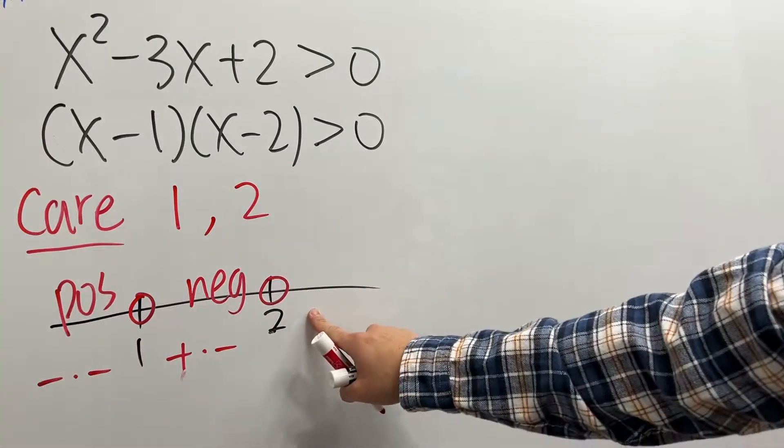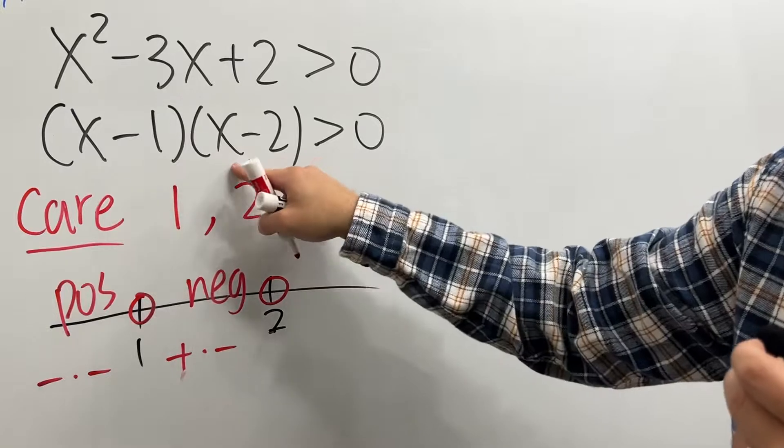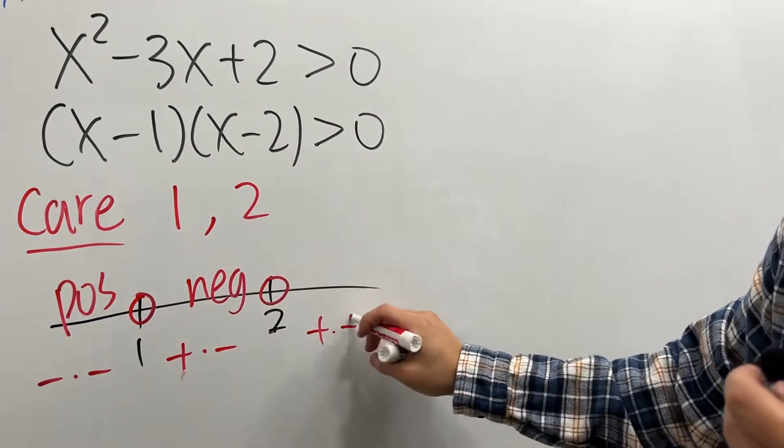Then, pick a number bigger than 2, let's say 3. Put it here, it's positive. Put it here, it's positive. So, the result is positive.